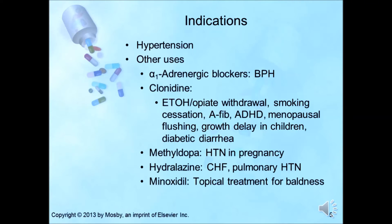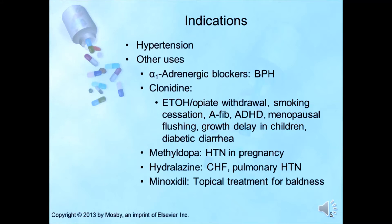For the medications used in hypertension, what are the indications? Alpha-1 receptor blockers are indicated for hypertension and also have unlabeled use for the signs and symptoms of benign prostatic hyperplasia (BPH). Prazosin has been used for post-traumatic stress disorder and Raynaud's phenomenon. Clonidine is used for hypertension but also has many unlabeled uses, including alcohol and opiate withdrawal, smoking cessation, atrial fibrillation, attention deficit hyperactivity disorder, menopausal flushing, constitutional growth delay in children, diabetic diarrhea, restless leg syndrome, ulcerative colitis, and the diagnosis of pheochromocytoma.